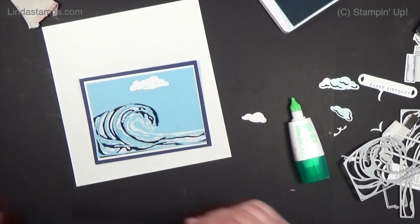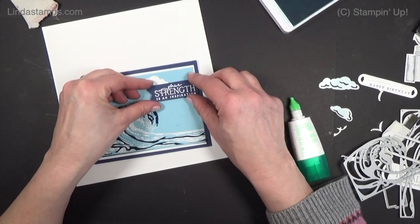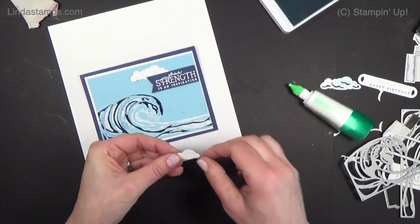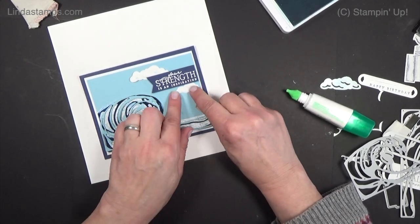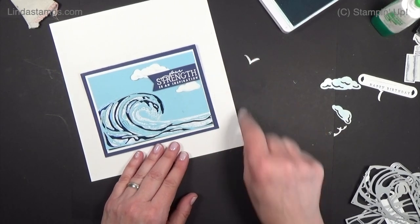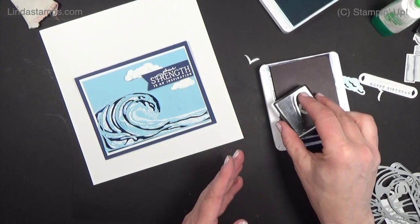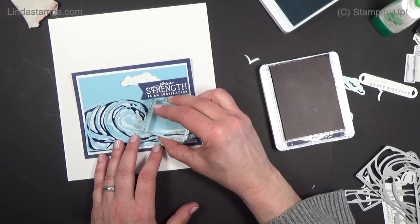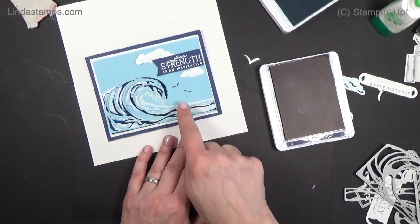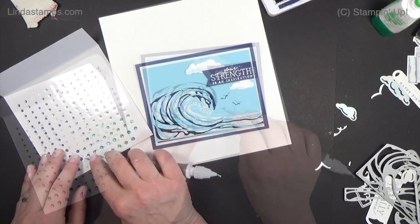I'm going to put one up here and I'm going to put my sentiment on next. This one I just did 'your strength is an inspiration' that comes in that set on navy with white embossing. And my second little cloud. Then we can add the little seagulls. I could add large ones like that with the die, these little guys, or I could just stamp them which is what I think I'm going to do. It's tiny but it works. I'm going to stamp them in navy right here. I'm going to add some rhinestones to the front and then we'll show you what we're going to do on the inside.